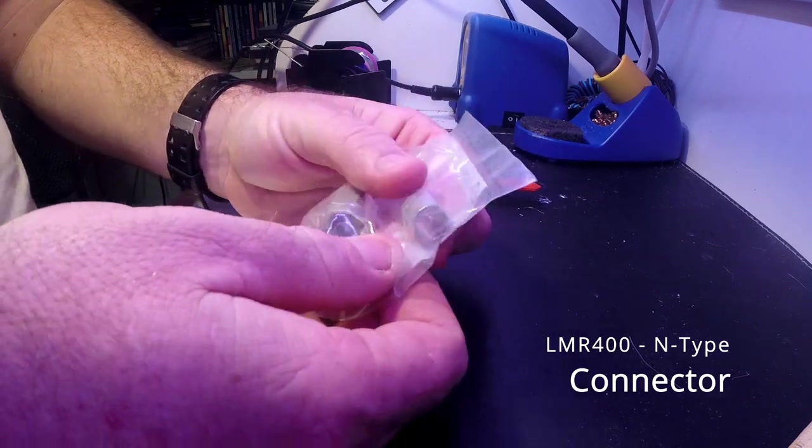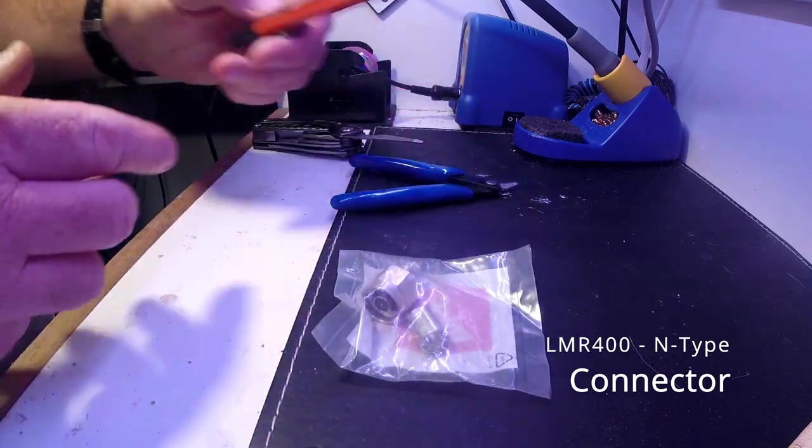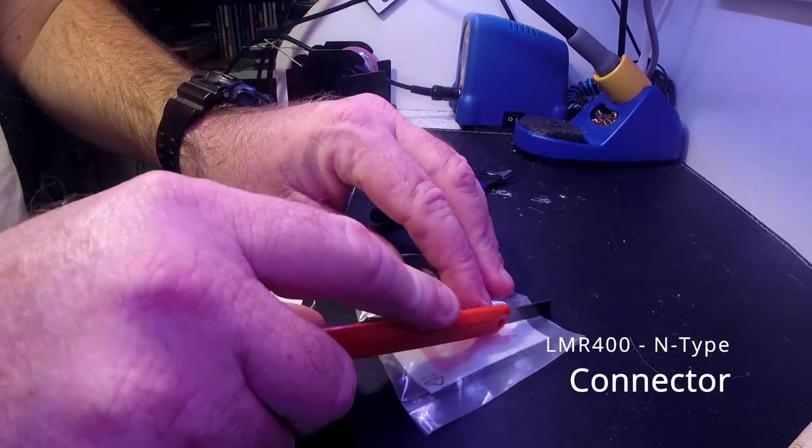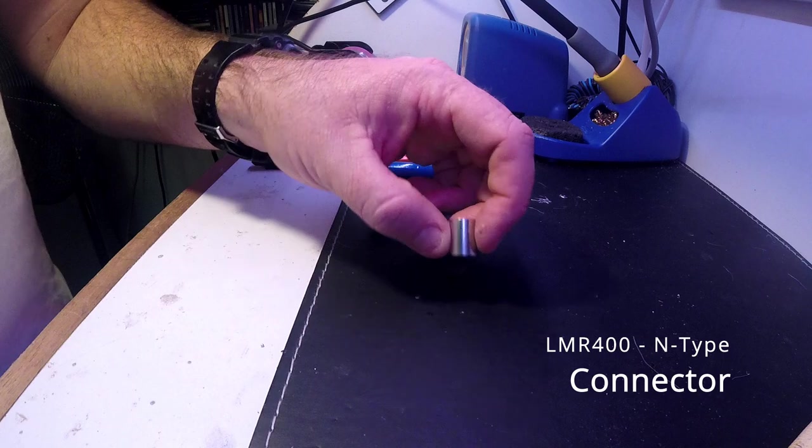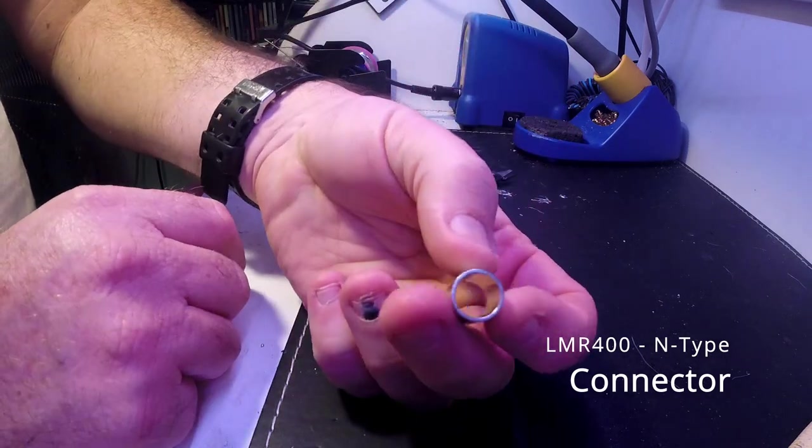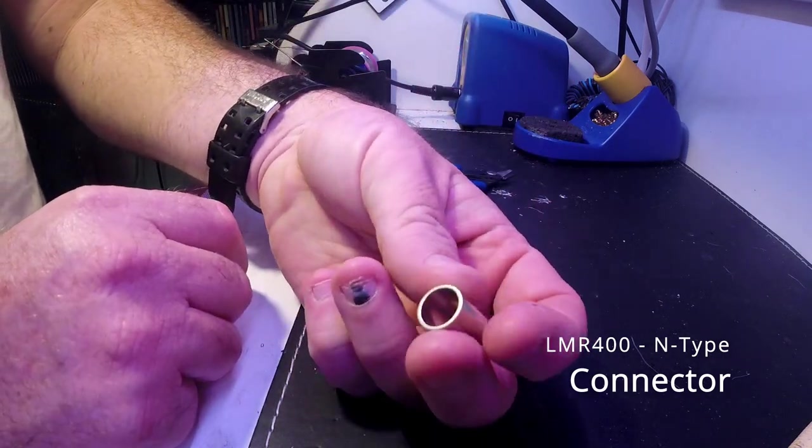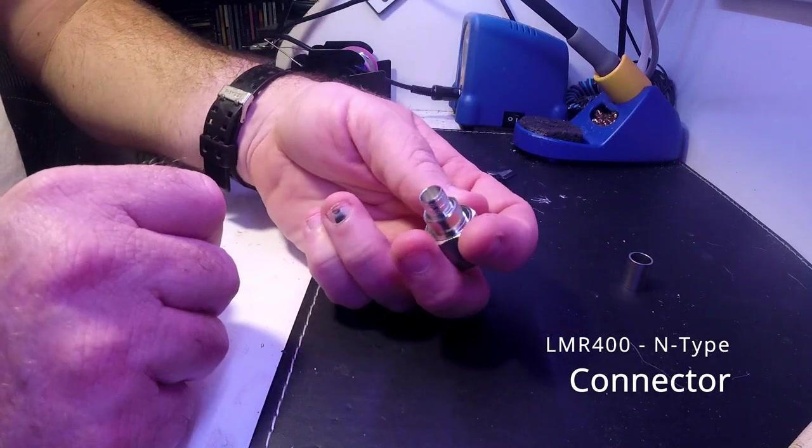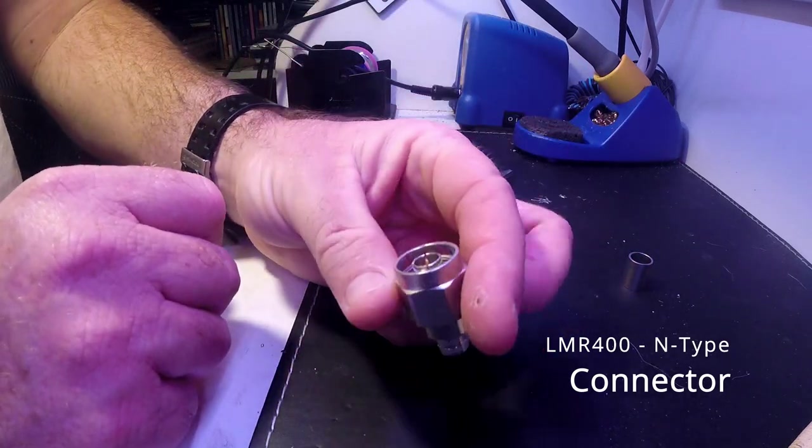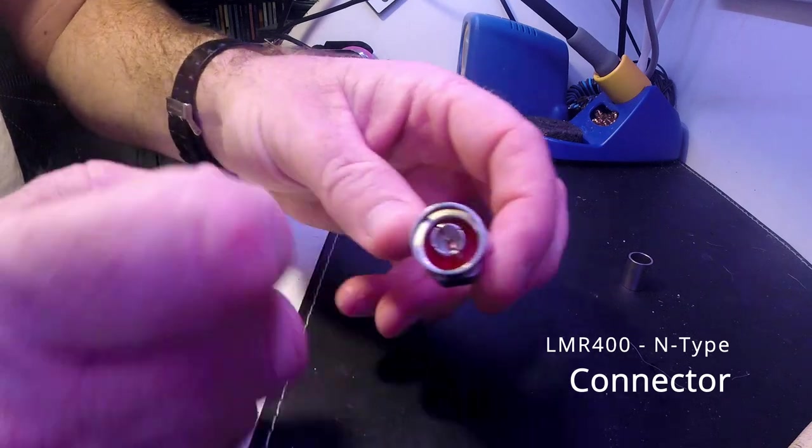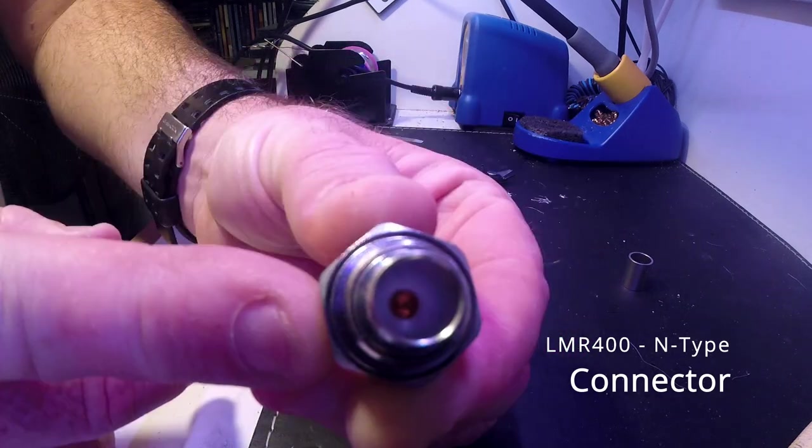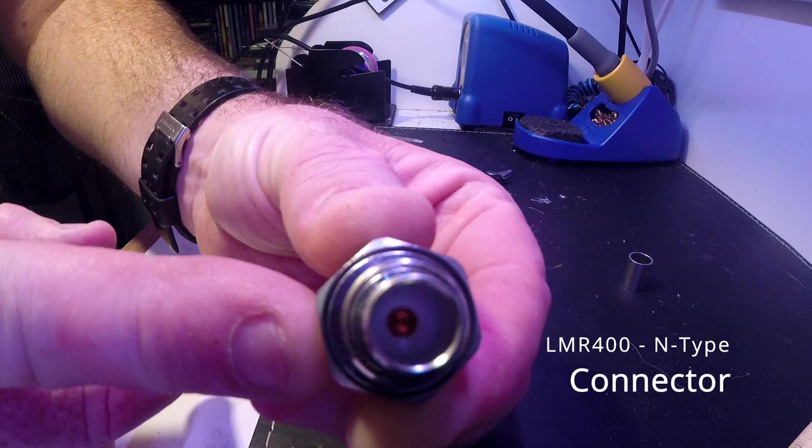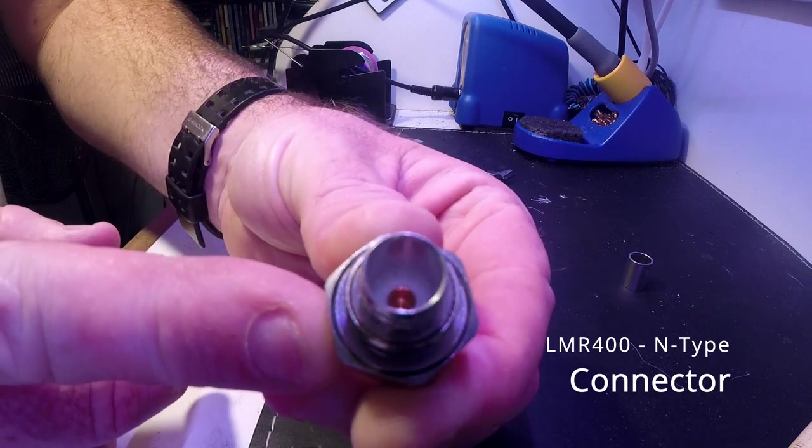These are a solder-less type connector. It only consists of two parts. One is the crimping collar which you put on your coax cable first. And the second part is the actual connector itself and that's all one piece. The center pin is already in there. Push the center conductor in there and it clamps down.